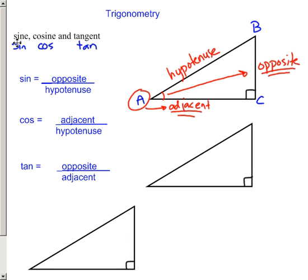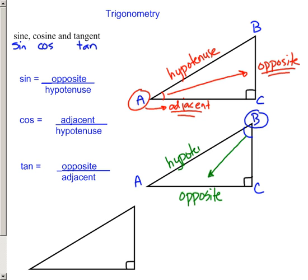We could do the same thing focusing on angle B instead, and we'd get different results. Sine is still opposite over hypotenuse, but the side opposite B is different. The cosine of angle B is the side adjacent to B divided by the hypotenuse, and tangent is opposite over adjacent. The definitions stay the same, but you need to be clear about which angle you're finding the sine, cosine, or tangent of.